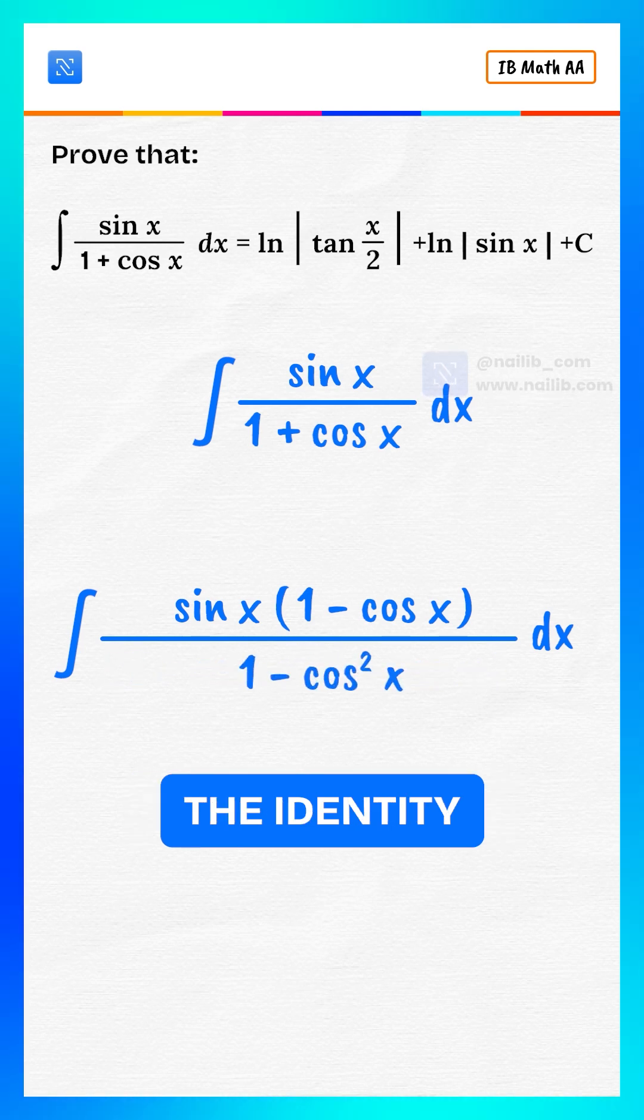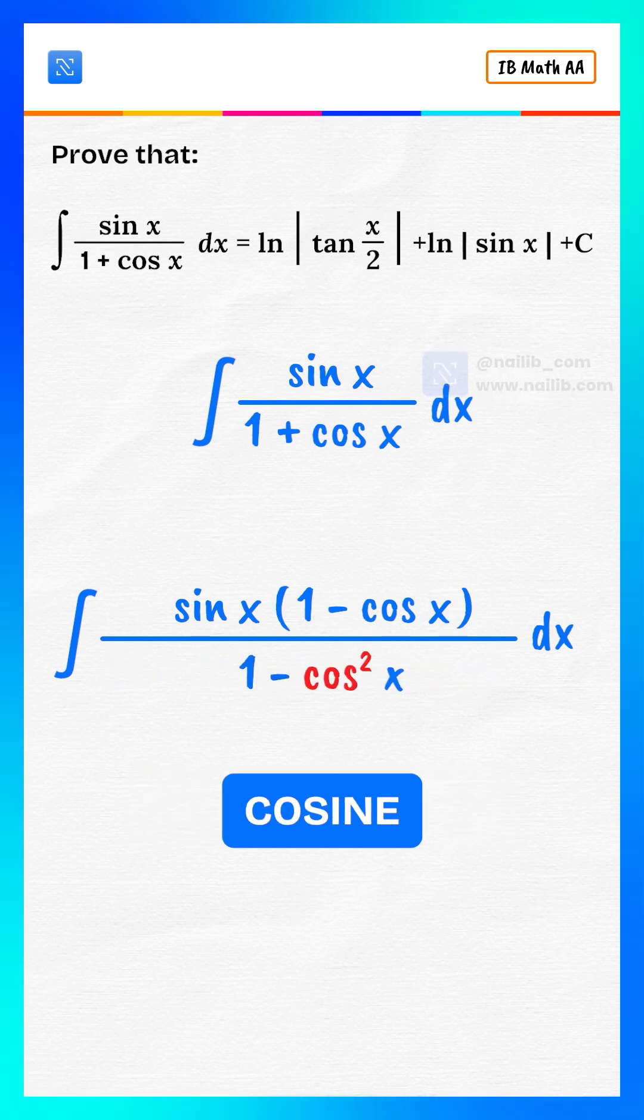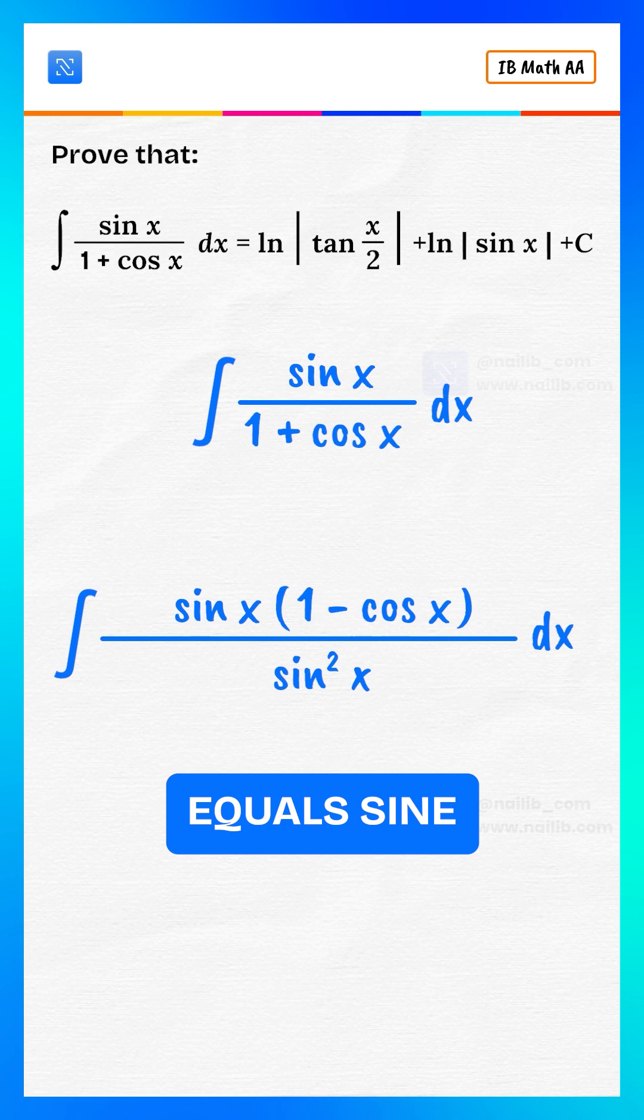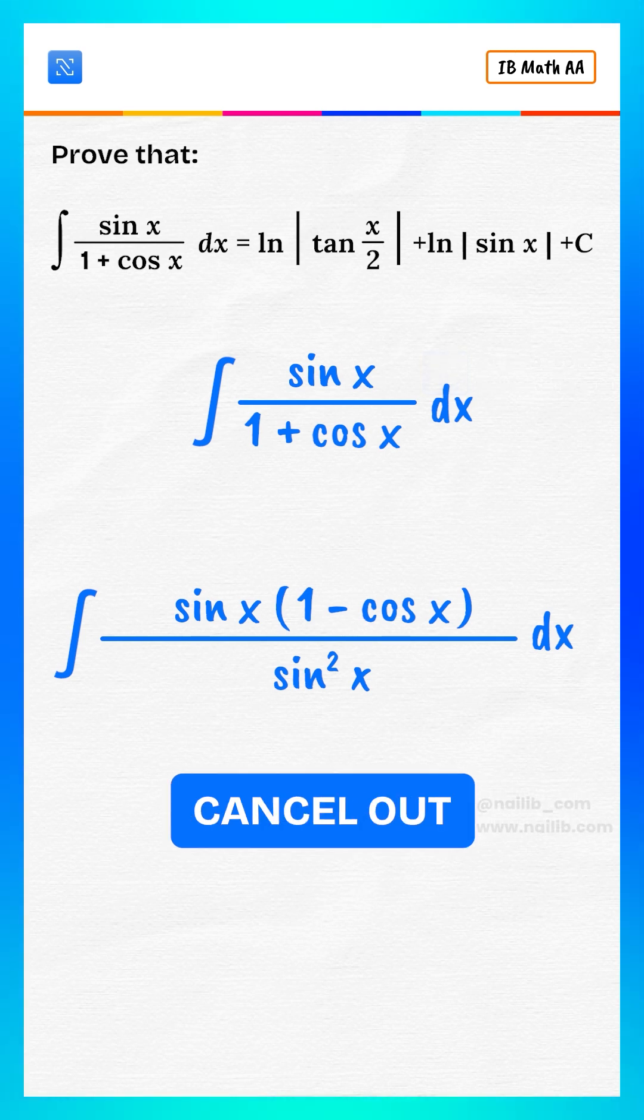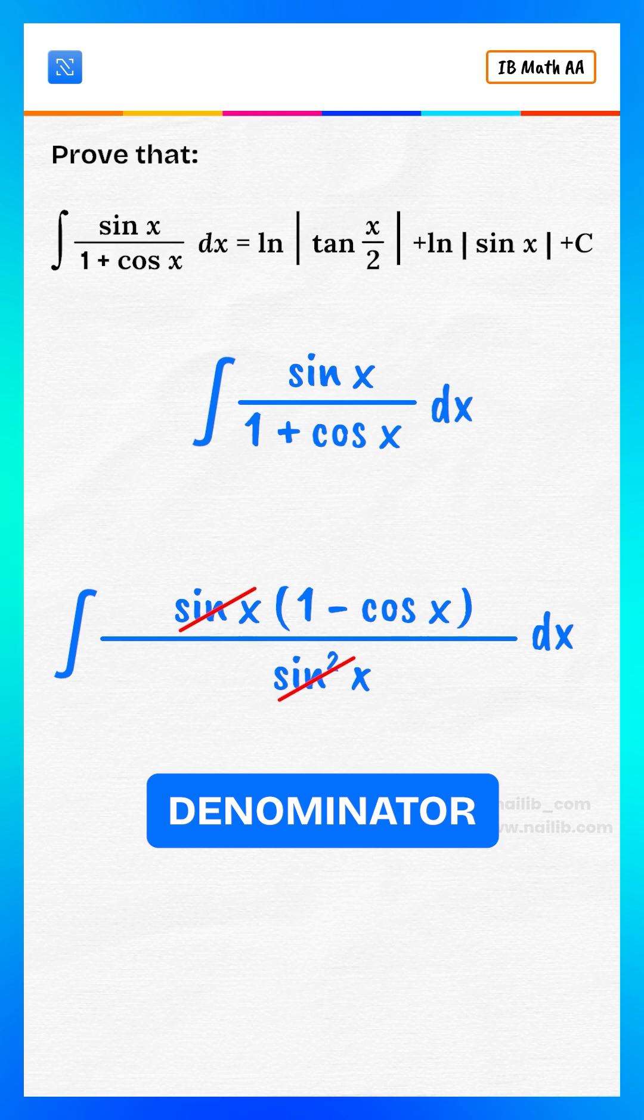Now, remember the identity: 1 minus cosine squared x equals sine squared x. Cancel out 1 sine x from numerator and denominator.